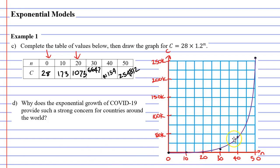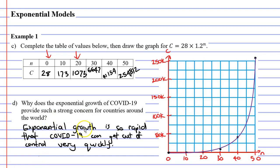Moving on to question D: why does the exponential growth of COVID-19 provide such a strong concern for countries around the world? Exponential growth is so rapid that COVID-19 can get out of control very quickly. That concludes our video on example one. Remember to read the description below for links to workbooks that relate to this video.